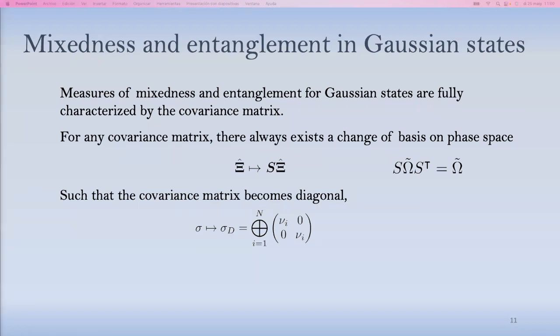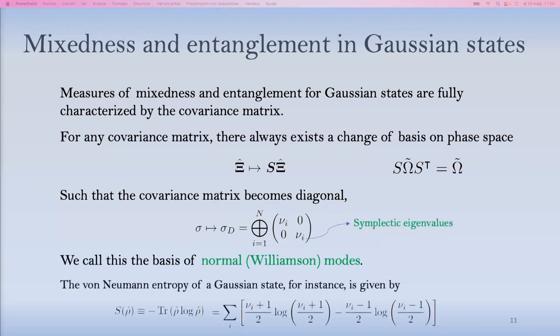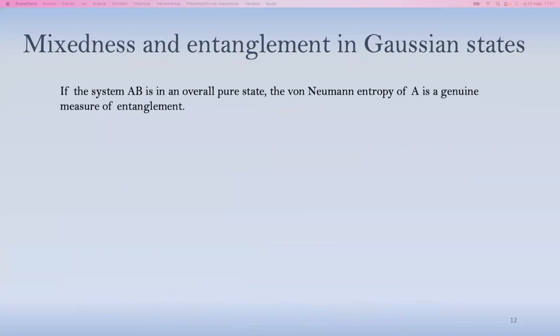And to do that, schematically, would be to remember that for any covariance matrix, you can find a change of basis on phase space, so a symplectic transformation on those phase space variables, such that the covariance matrix takes this diagonal decoupled form. We call the basis where this happens the basis of normal modes in our paper. Some people find this controversial, so just clarify that this is the Williamson modes, because the fact that this is true for any covariance matrix is the Williamson's theorem. And these numbers are the symplectic eigenvalues of the covariance matrix. In particular, just for illustration, the von Neumann entropy of a Gaussian state is fully determined by the symplectic eigenvalues, by a closed form expression that you can work out.